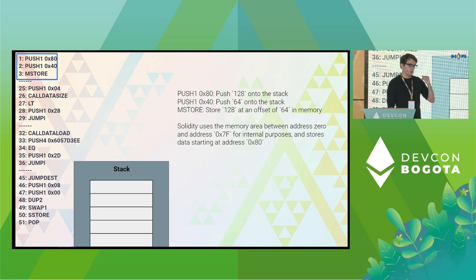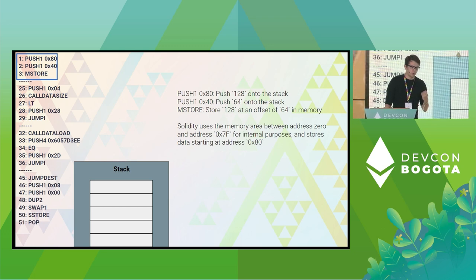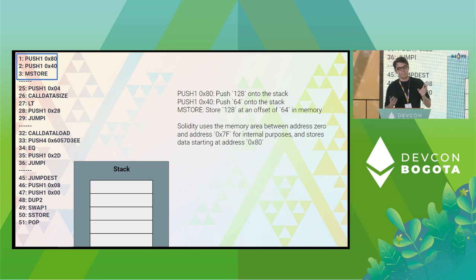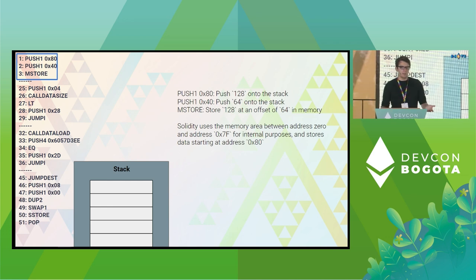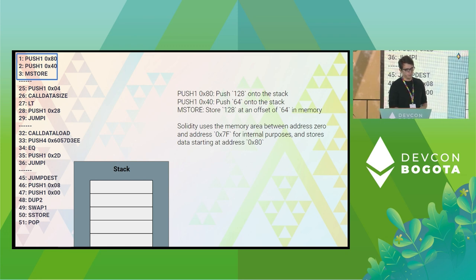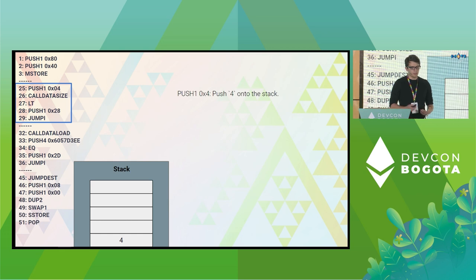We jump to line 25 in our list of opcodes. Between lines 3 and 25, there's some more boilerplate — validation of msg.value and making sure you can't send ether to a non-payable function. That's not really relevant to us because our function isn't payable, so we skip that.